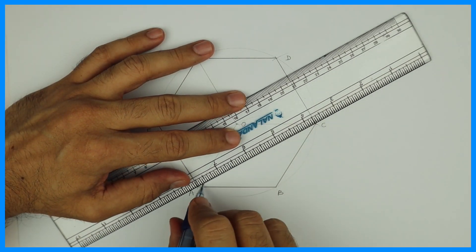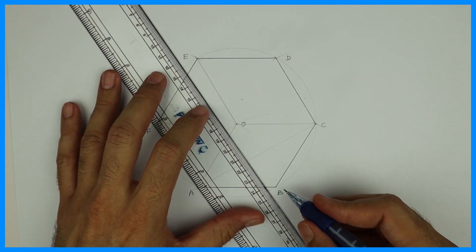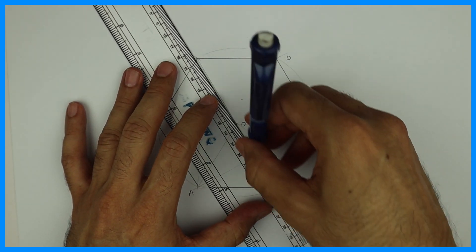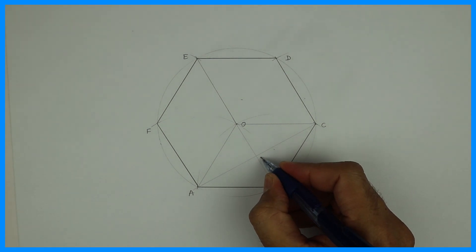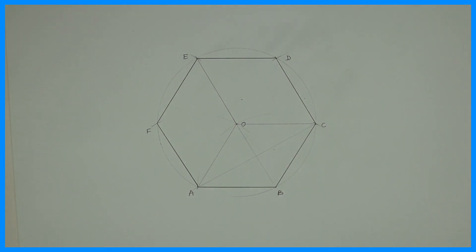Then join diagonal AC and line OB. By doing this you'll get the center point of the first circle.